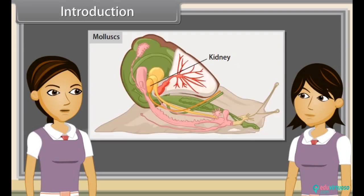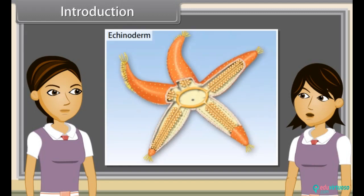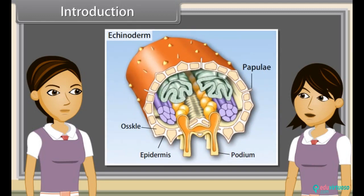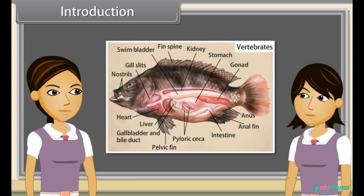In molluscs, excretory organs are kidneys. In echinoderms, excretory organs are dermal papulae. While in urochordates, it is the neural gland, and in cephalochordates, it is protonephridia. In vertebrates, excretory organs are one pair of kidneys.